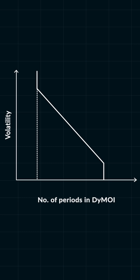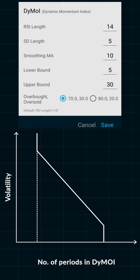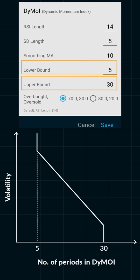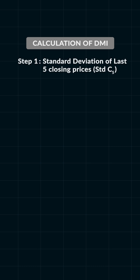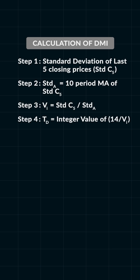DMI also gives you the ability to restrict the minimum and maximum number of days used for the calculation to fit your trading horizon — the defaults are 5 and 30. For those interested in how DMI is calculated: first, we calculate the standard deviation of the last five closing prices. Then we take a 10-period moving average of that standard deviation. We divide step 1 by step 2 to get what we call VI. Then we calculate a variable called TD by dividing 14 by VI.